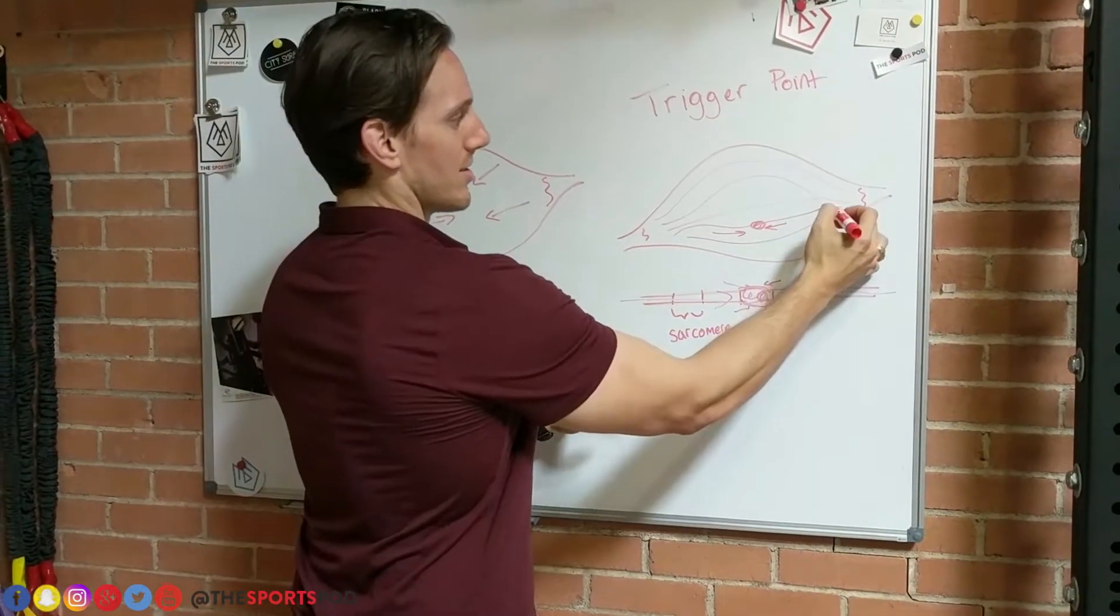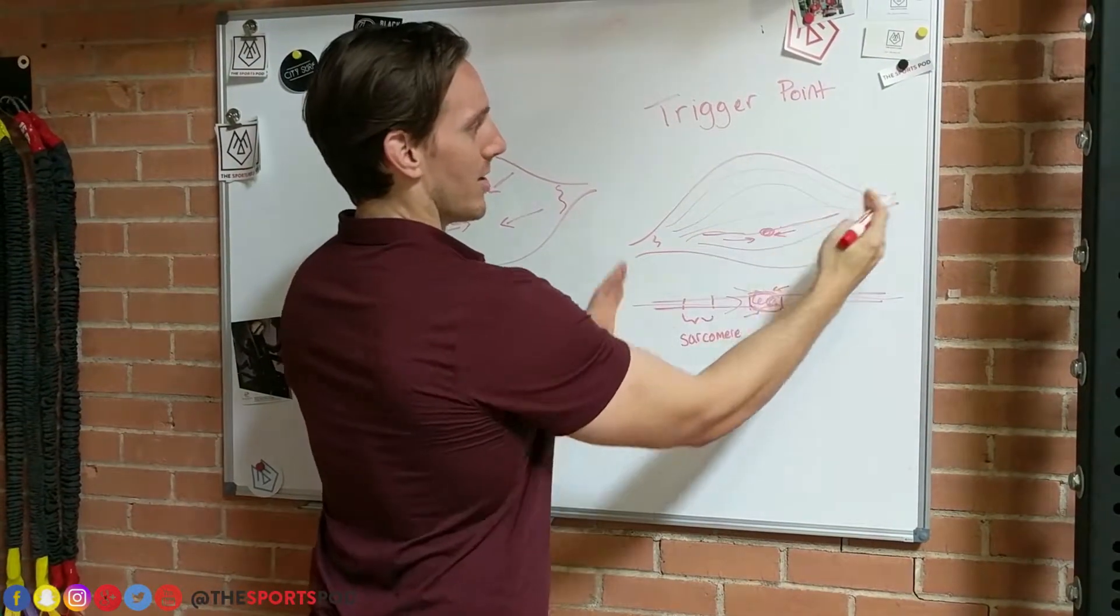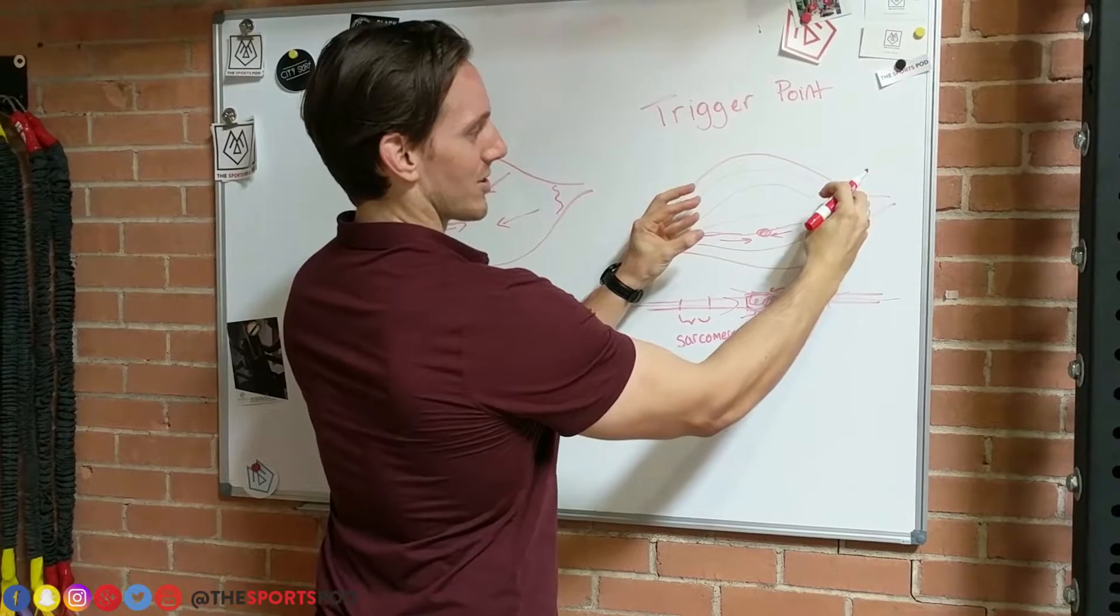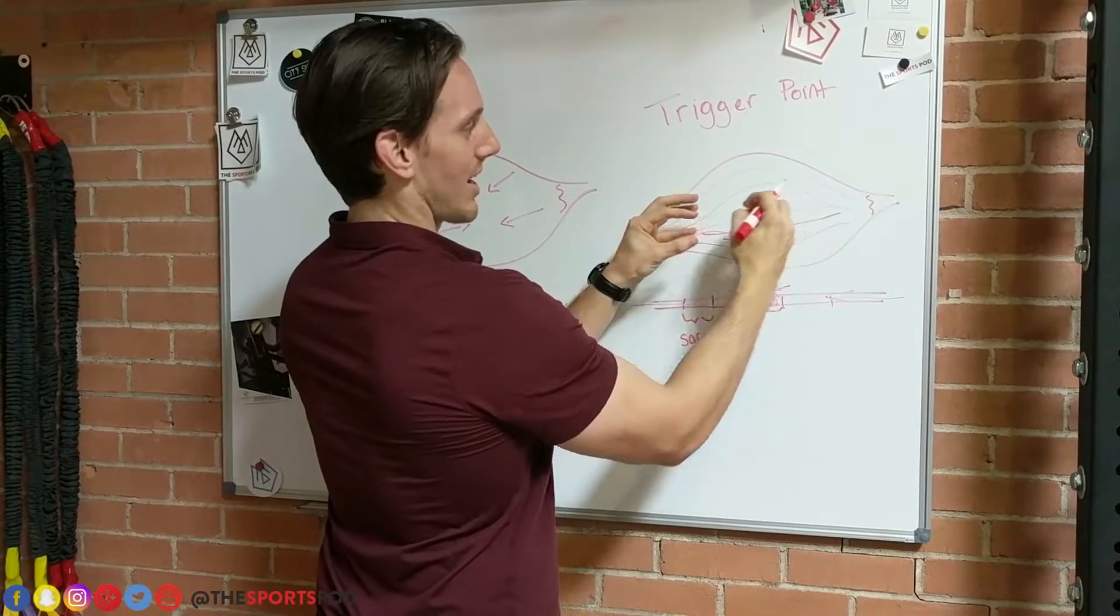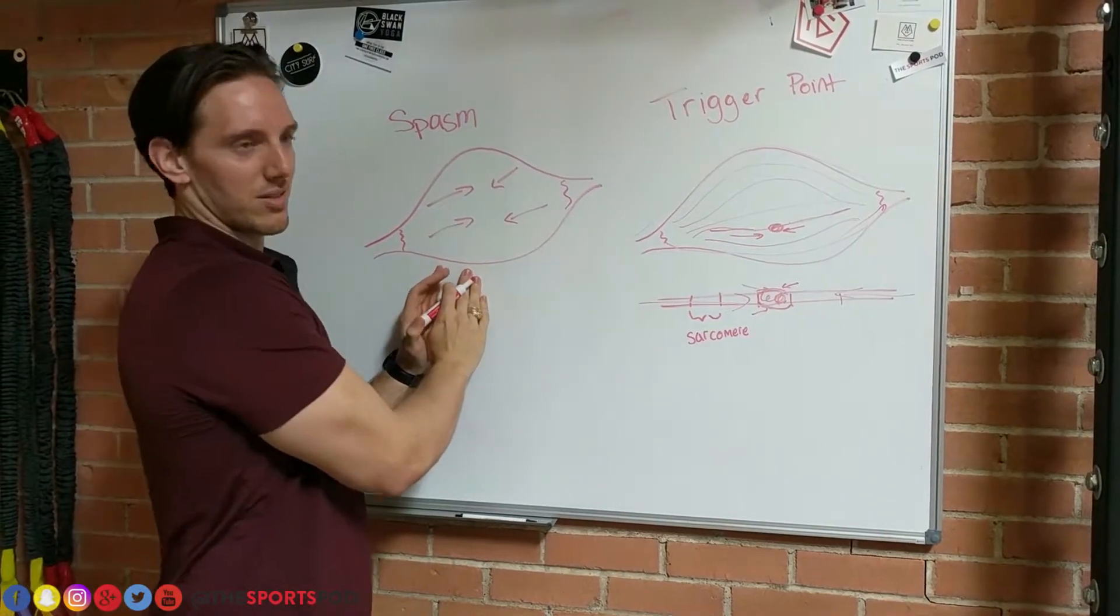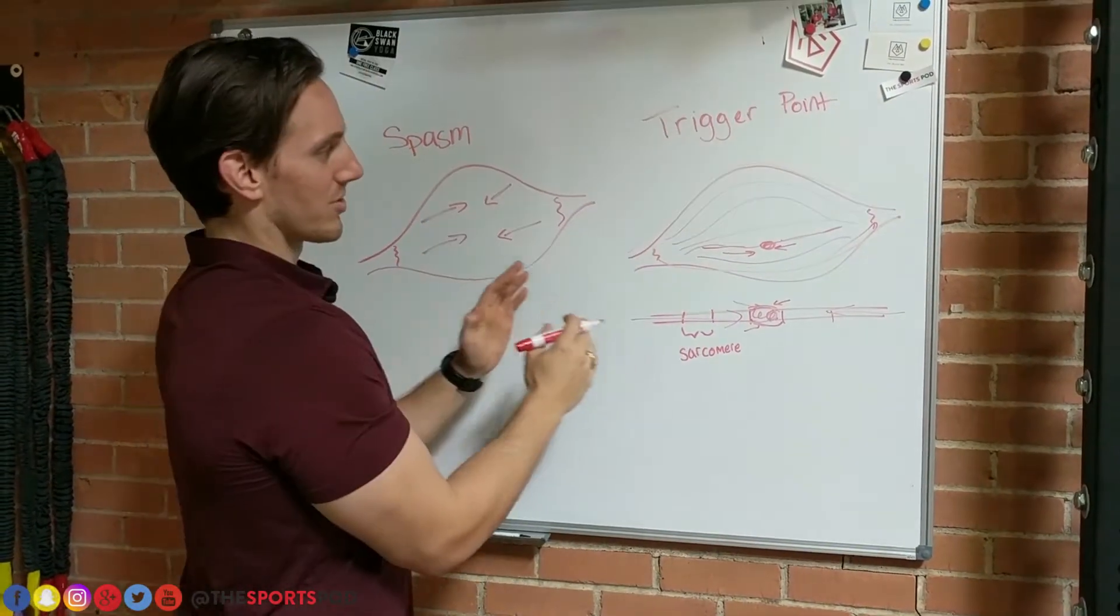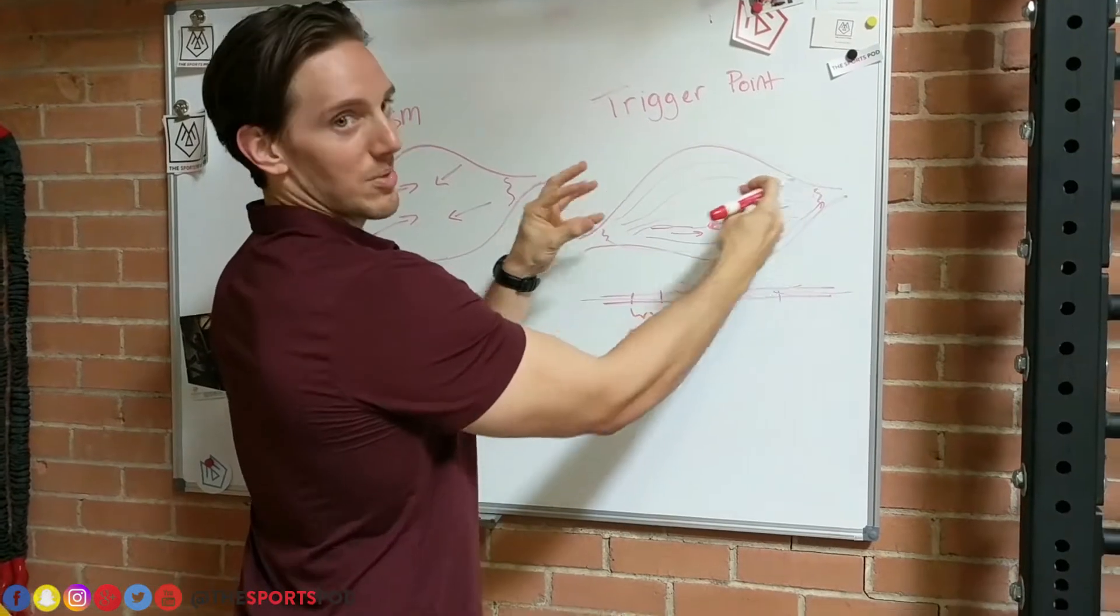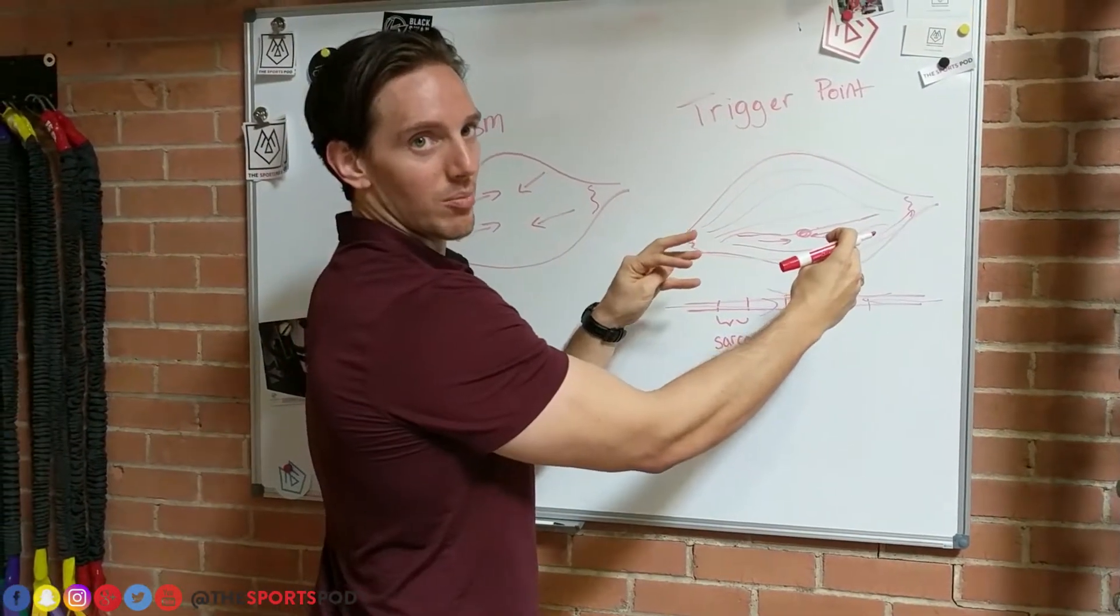But what happens is this tight muscle fiber basically stiffens this muscle up and causes tightness through this entire muscle itself. Not on the level of a spasm necessarily, which is an active muscle contraction, but we just lose some of that elasticity in the muscle.